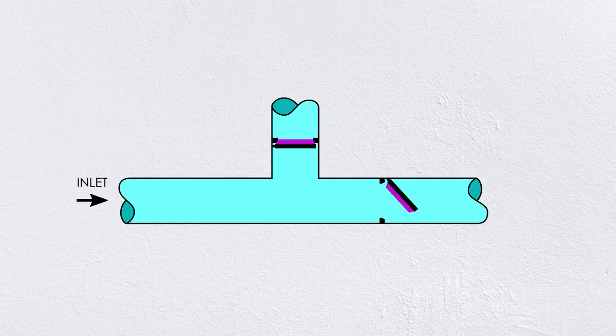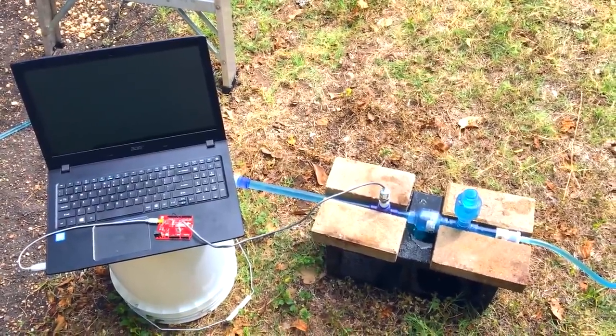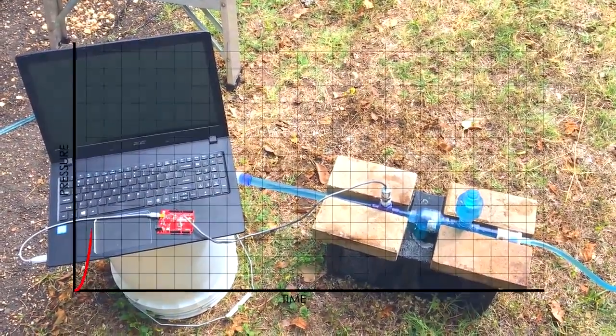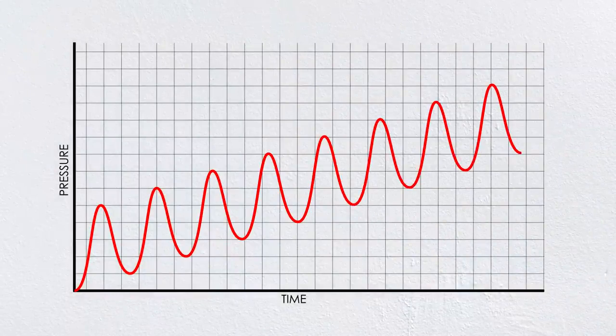It opens the second check valve and forces water entering the pump into the delivery line. As you can see from my digital pressure gauge, this process is cyclical, pumping some of the water and wasting the rest each time the valve slams shut.